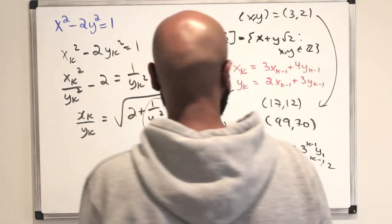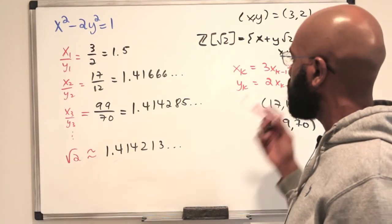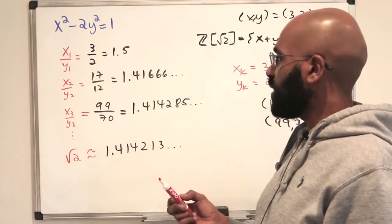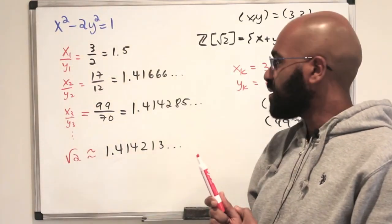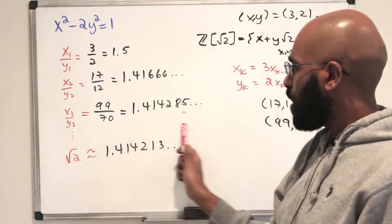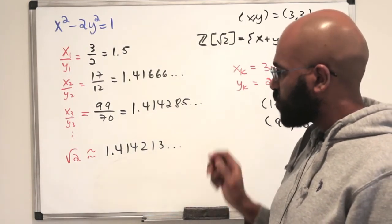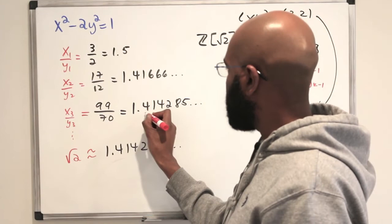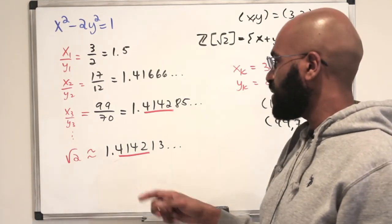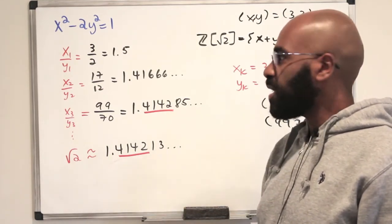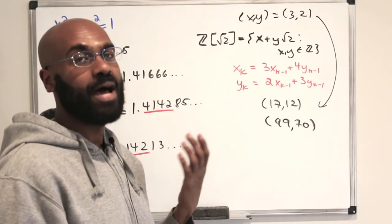Let's see how close these approximations are using the solutions we've developed. We have x_1/y_1 equals 1.5, x_2/y_2 equals approximately 1.4166 repeating, and x_3/y_3 is approximately this value here. Here's an approximation of the square root of 2. These numbers are getting closer and closer to the square root of 2, and they come quite close quite fast. For example, x_3/y_3 actually agrees with the square root of 2 in the first four places after the decimal. This is a really interesting way to approximate the square root of 2 using this number system and the recurrence relation we got by looking at norms.